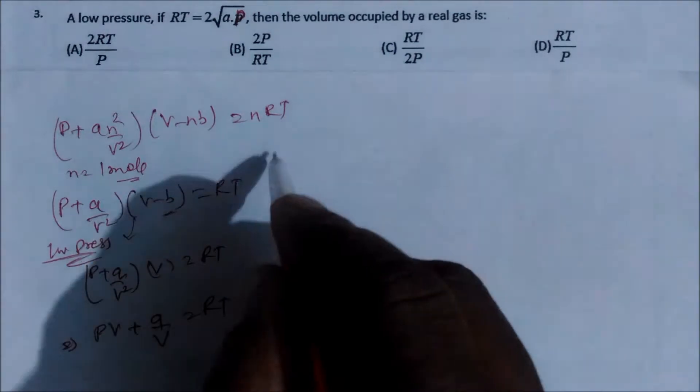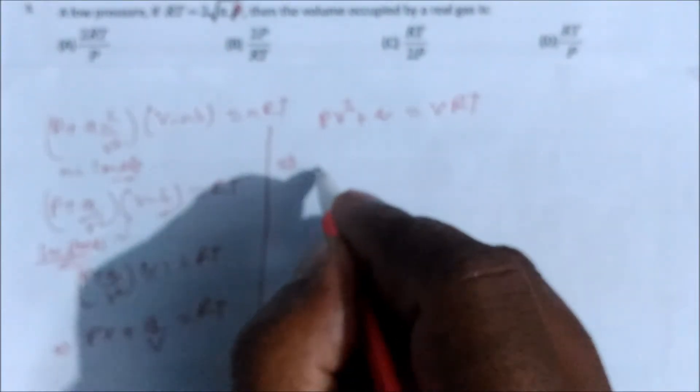Again we can solve here. So if you multiply P into V square, so P into V square plus a, and this becomes your V into R into T. So if you see carefully this is coming something like a quadratic equation. So we can say PV square minus VRT plus a is equal to zero.